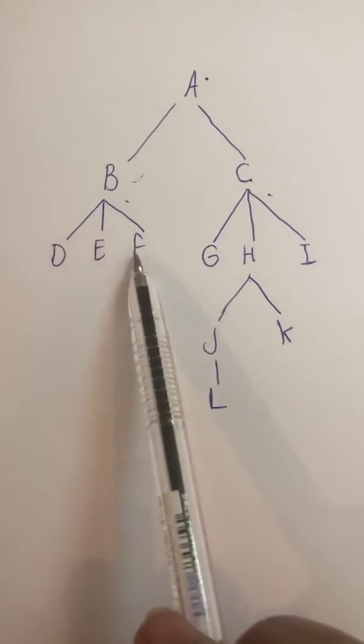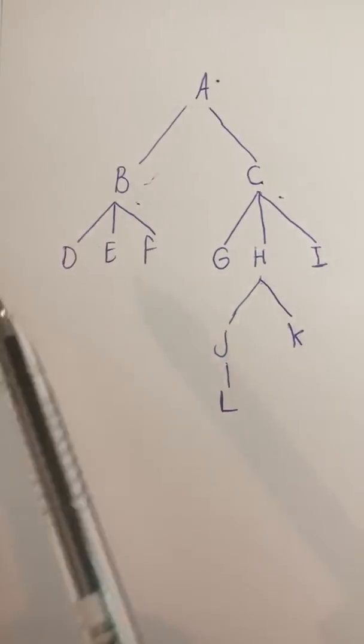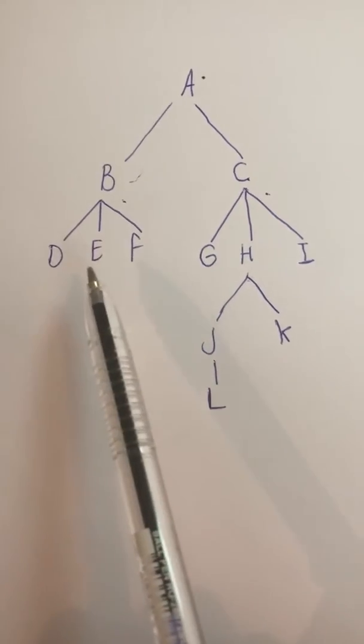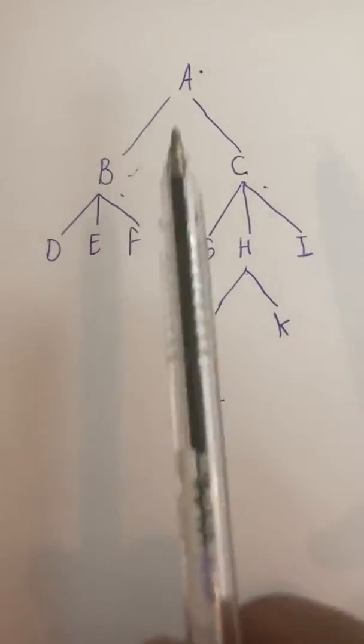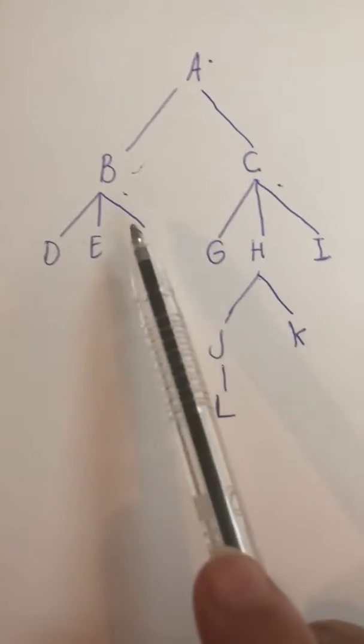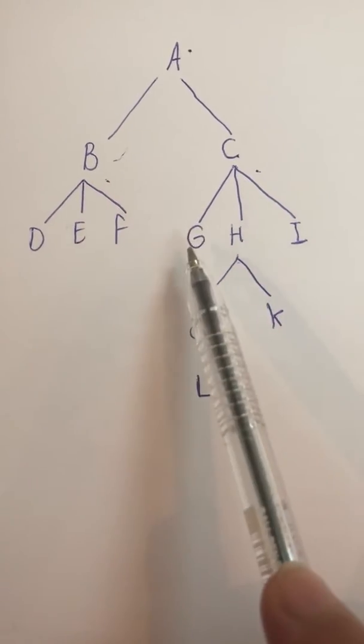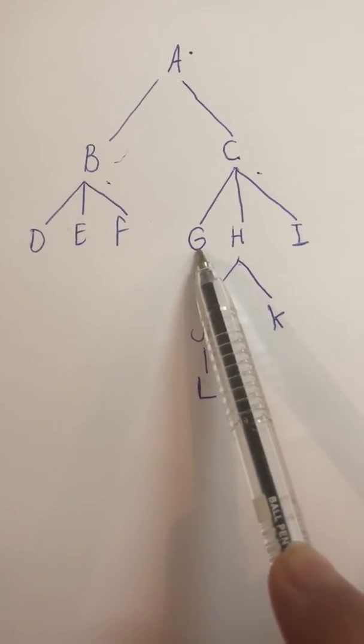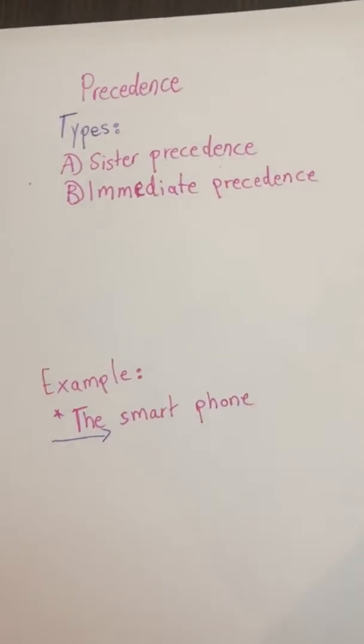It does sister precede F, why? Because they share the same mother and they're starting from the left to the right. Now, does F sister precede G? We're going to find out once we know about immediate precedence.